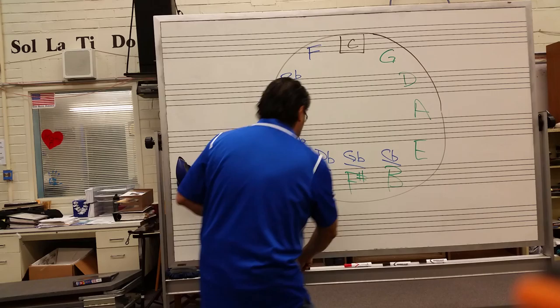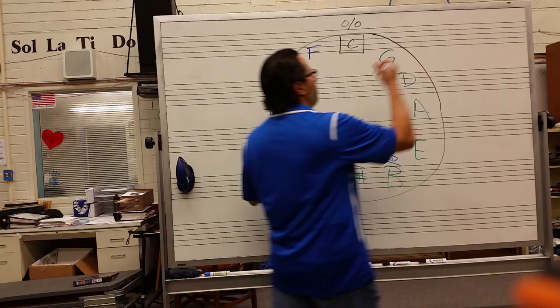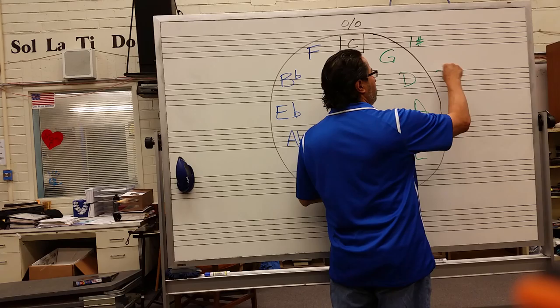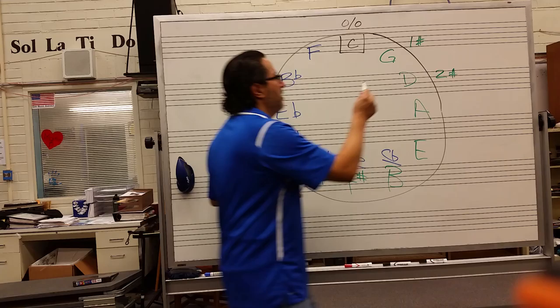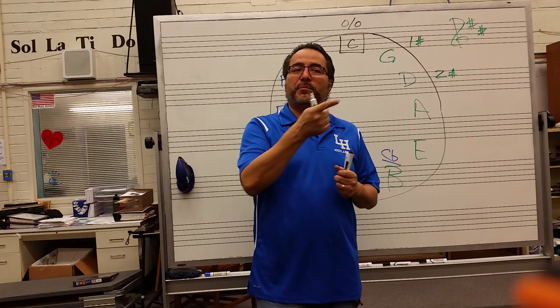Key of C is neutral — zero sharps and zero flats. Key of G is one sharp, so if you see one sharp you are in the key of G. G is the most important note and most important chord. Key of D is two sharps: F sharp and C sharp.